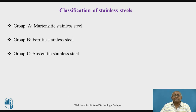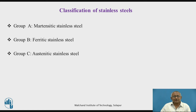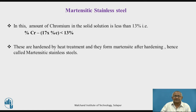Stainless steels in general are classified into three groups. Group A: martensitic stainless steels. Group B: ferritic stainless steels. Group C: austenitic stainless steels.